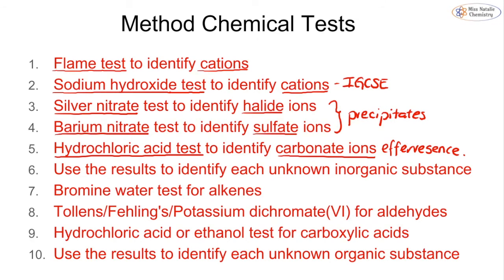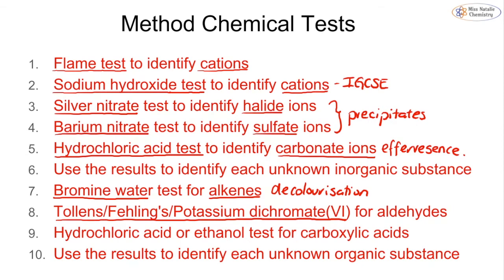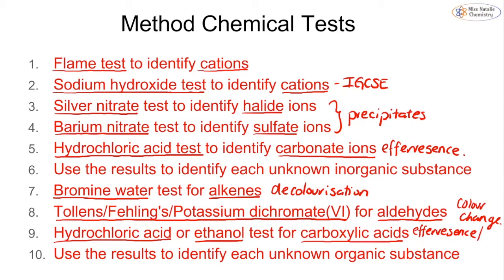For organic substances, the first test is bromine water for alkenes — we look for decolorization as a positive result. We can then use Tollens', Fehling's, or potassium dichromate for aldehydes, looking for colour changes. For carboxylic acids, we can add hydrochloric acid to see effervescence, or add ethanol to form an ester.